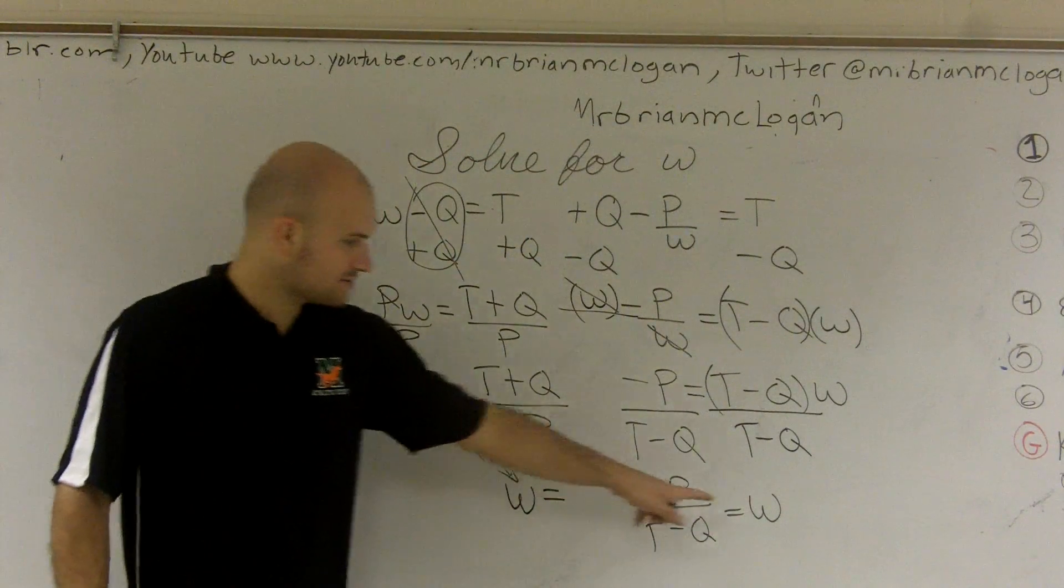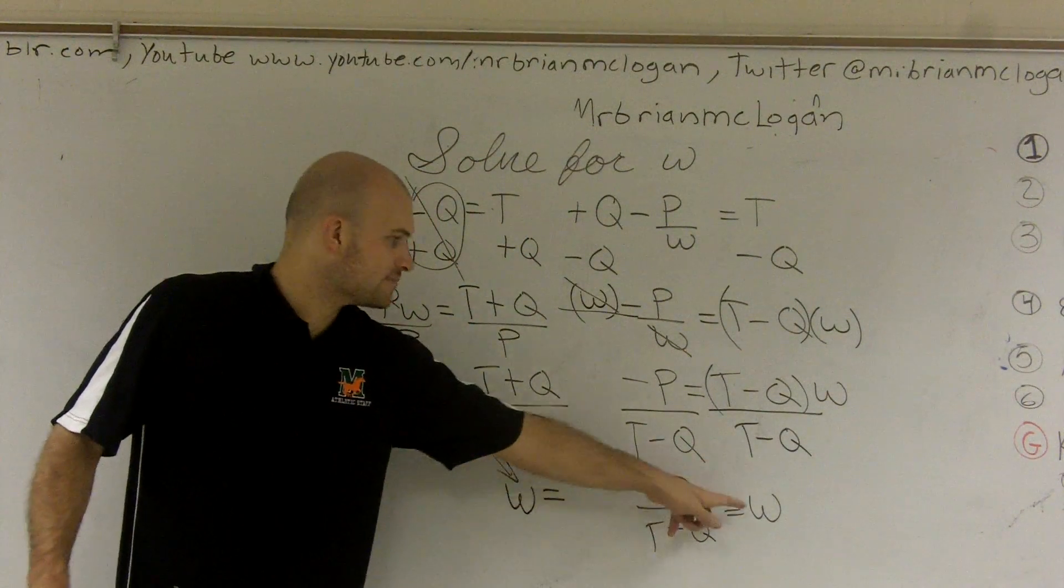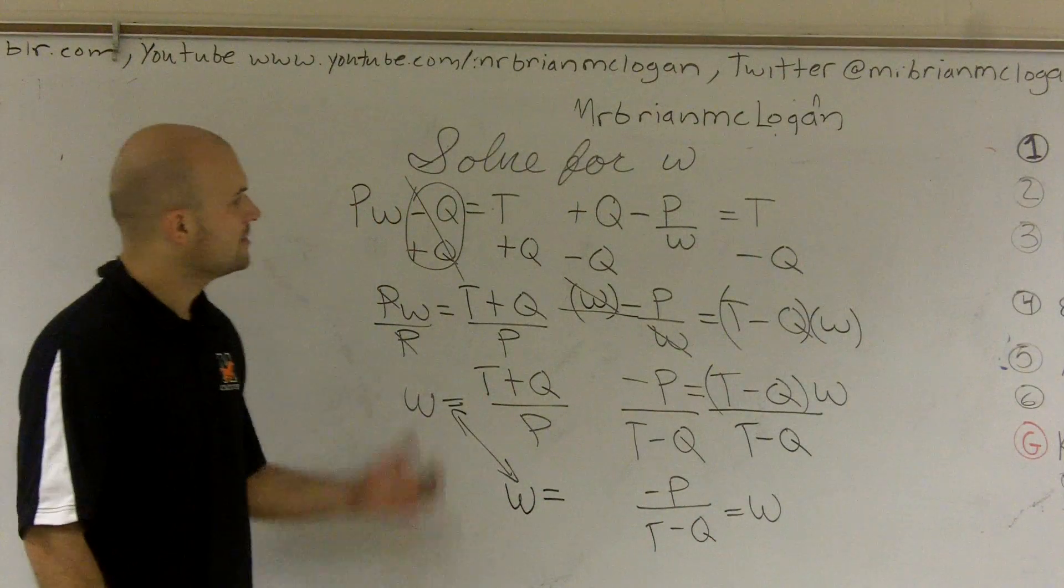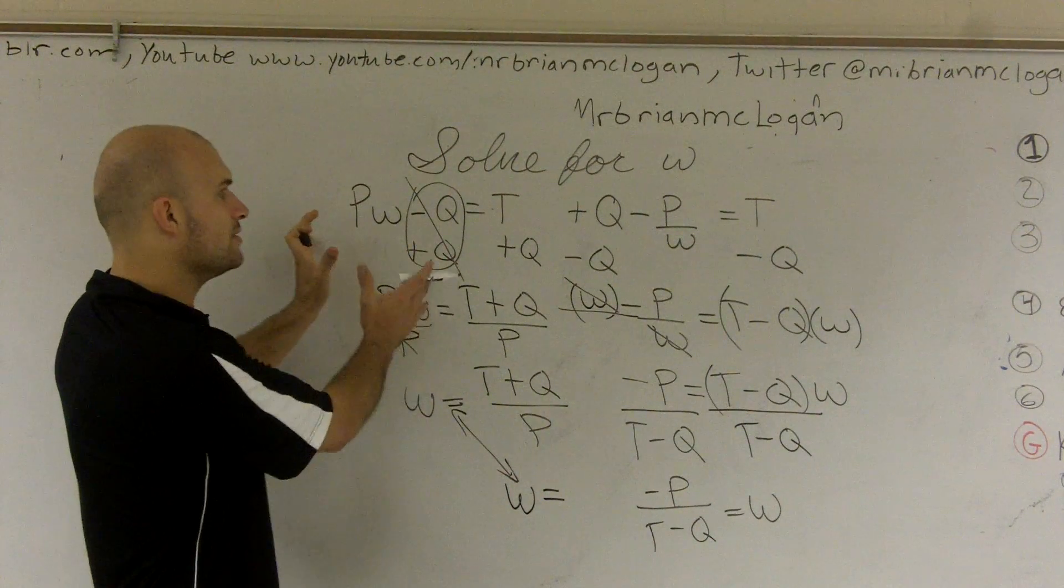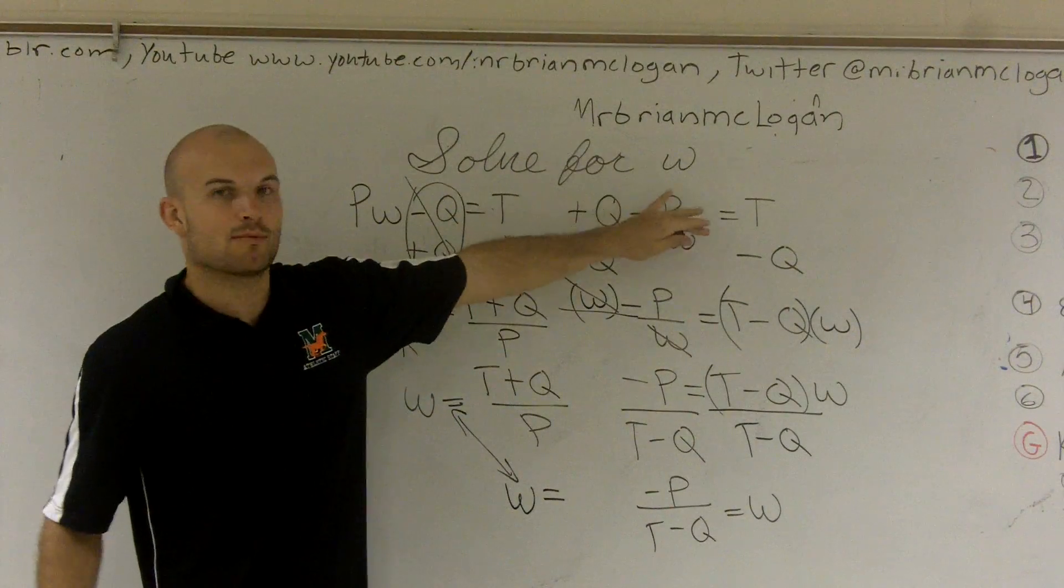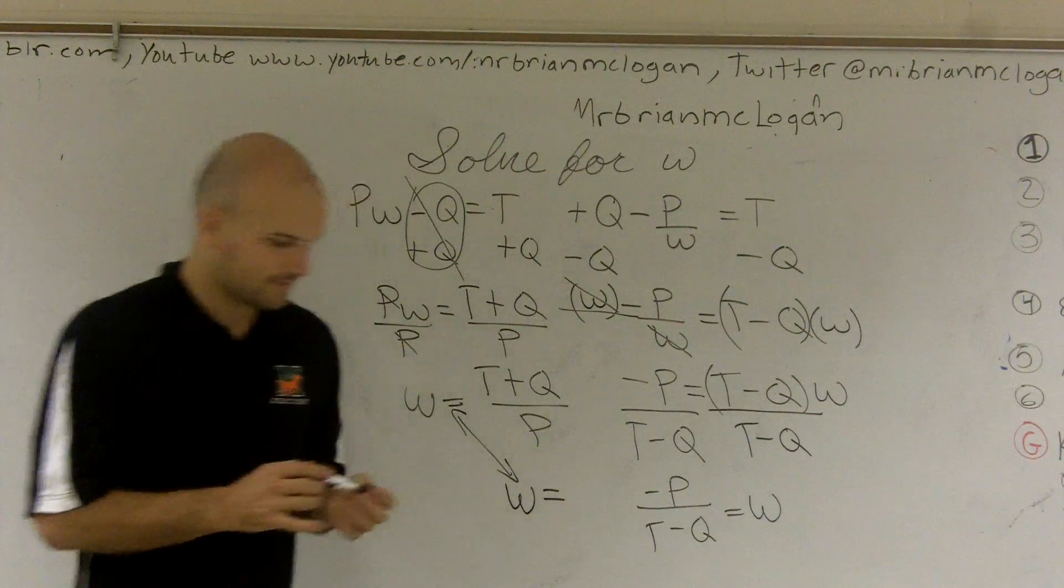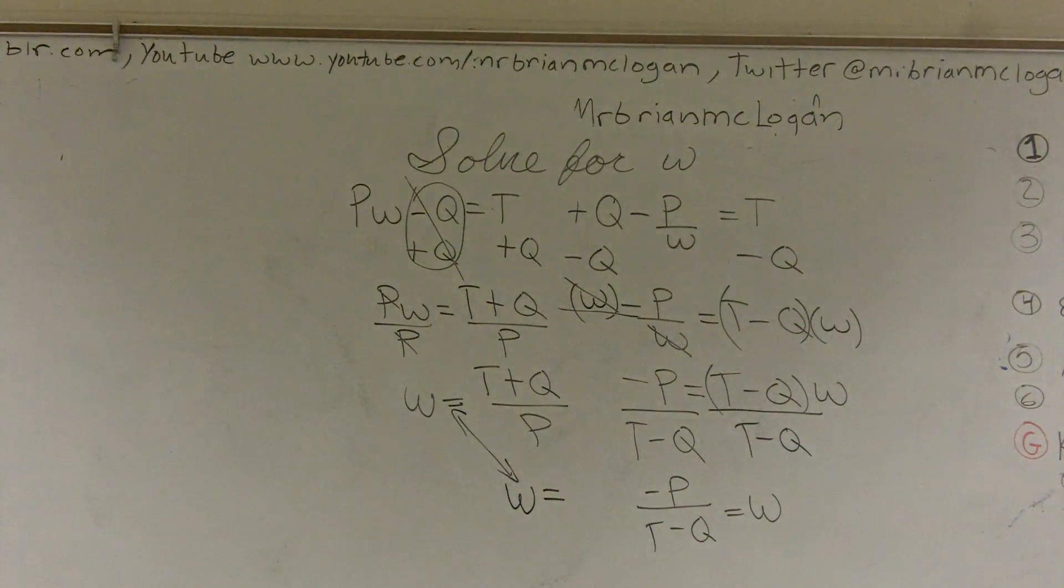And therefore, I have a negative p all over t minus q equals w. And again, do I have a w equals? Well, yes. It's kind of written the other way. But still, my w is by itself. So that's how you solve for w when you have a simple literal equation and a little bit more difficult literal equation. Question?